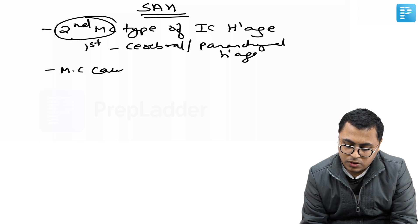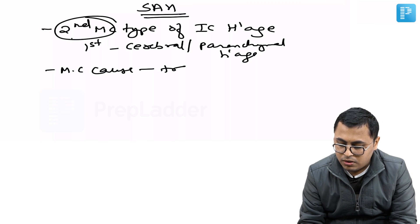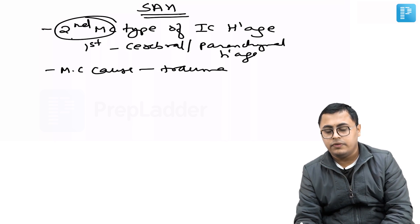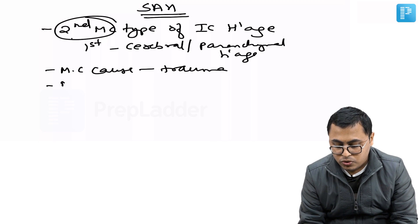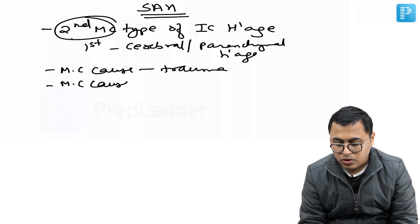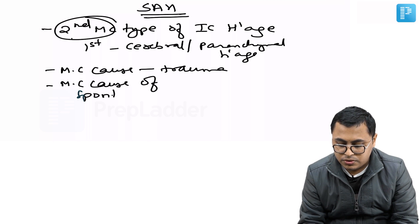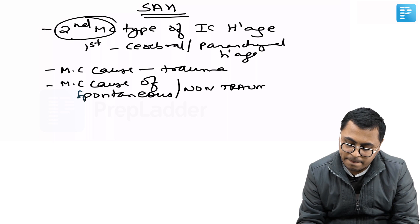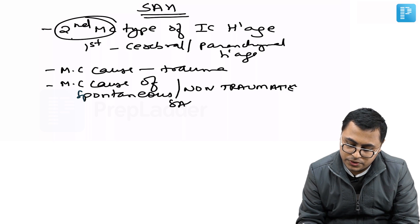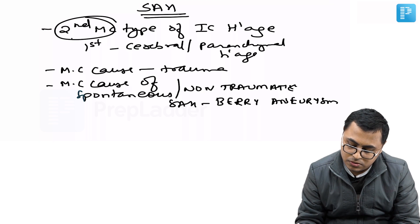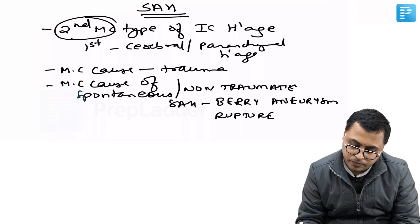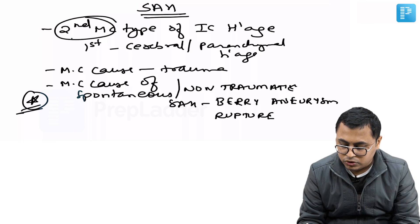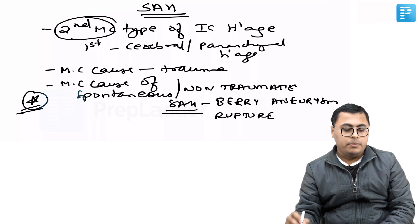Most common cause of subarachnoid hemorrhage is trauma. However, most common cause of spontaneous or non-traumatic subarachnoid hemorrhage is berry aneurysm rupture. This is a very commonly asked question.